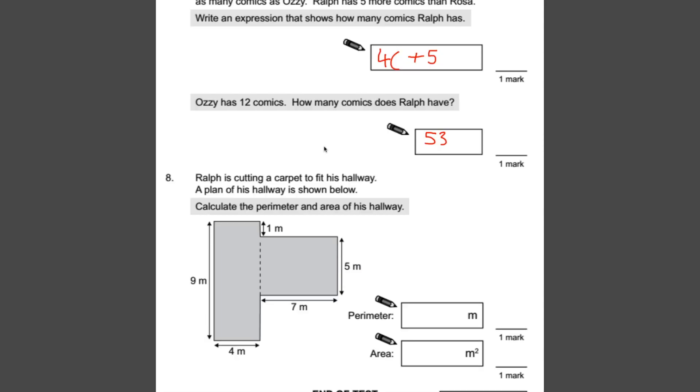Number eight, Ralph is cutting a carpet to fit his hallway. A plan of his hallway is shown below. Calculate the perimeter and area of his hallway. So if you remember, perimeter is if you go around the edge of the entire shape, add up all that distance, that would give you a perimeter. So let's start with that. Look at what we've got. Well, we've got nine. We've got four. We've got a couple of missing spaces. Look, we've got something missing here, something missing here, and something missing here. So if we can find out these numbers, we should be able to just add them up and get a perimeter.